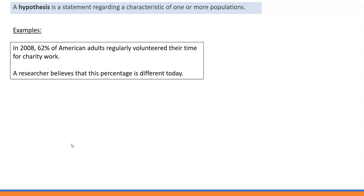Here's the first example. In 2008, 62 percent of American adults regularly volunteered their time for charity work. A researcher believes that this percentage is different today.